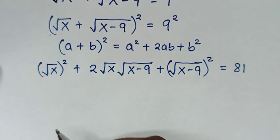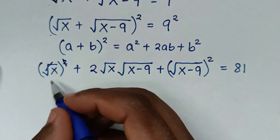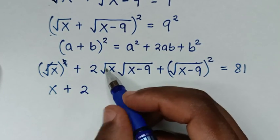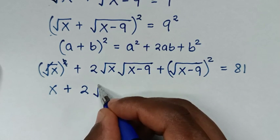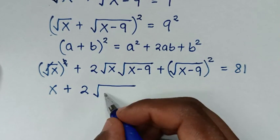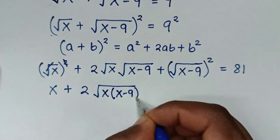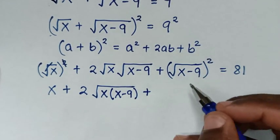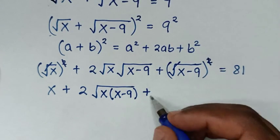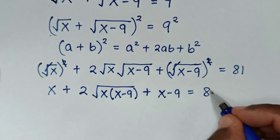In the next step, we simplify: the square root cancels the square, giving x. Then 2 times √x times √(x−9) becomes 2√(x(x−9)). And (√(x−9))² simplifies to x−9. So we have x + 2√(x(x−9)) + (x−9) = 81.